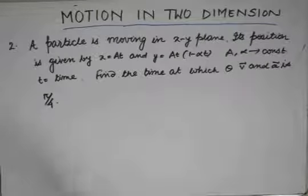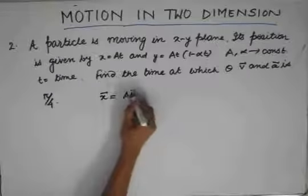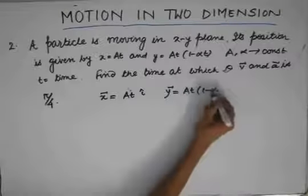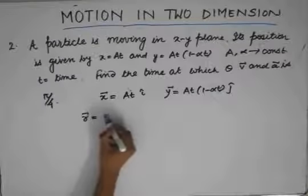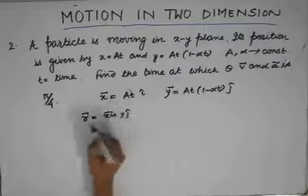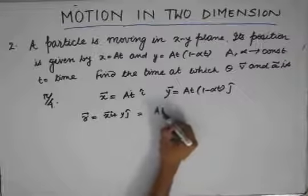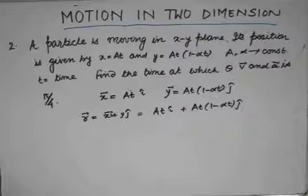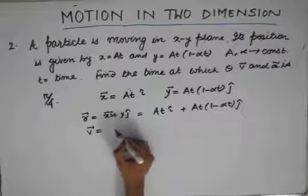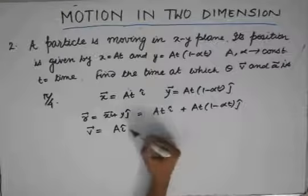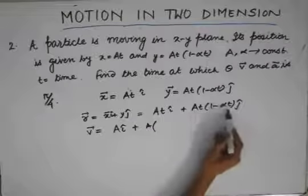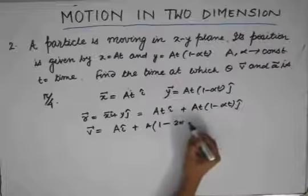Let's solve the question. Since we are given x as at and y as at(1 minus alpha t), I can write the radius vector as x·i + y·j. So I can write this as at·i + at(1 minus alpha t)·j. Now differentiating this, we will get the velocity vector. Differentiating at gives a, and differentiating the y component gives a minus 2·alpha·a·t.